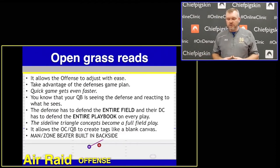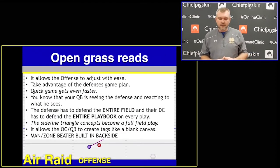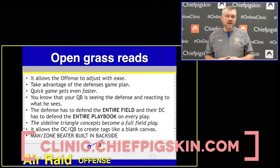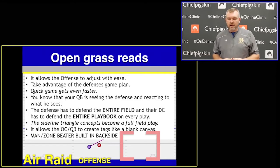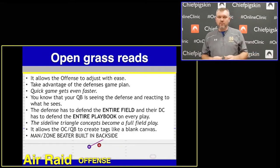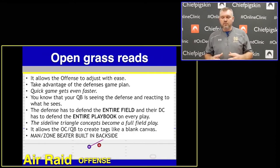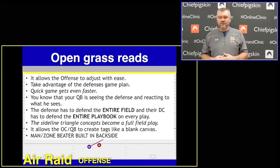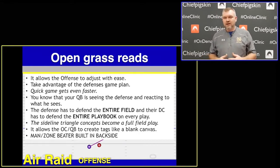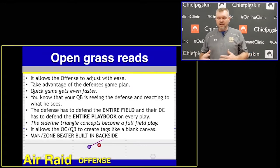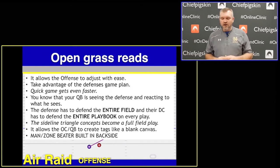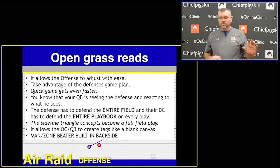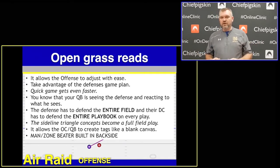One of the things I talk about in Open Grass Reads is we don't teach any coverage. I don't spend any time on the whiteboard with the quarterback teaching the different coverages he might see. I think it's kind of a waste of time with the way the brain learns. With that being said, why do we do this? It's because it allows our offense to adjust with ease. Each week we don't have to worry about putting different things in. We teach things in a brain picture. It takes advantage of the defense's game plan because we can easily adjust to the sight of distance and depth based on coverage and landmarks, more so than worrying about the philosophy behind different coverages.